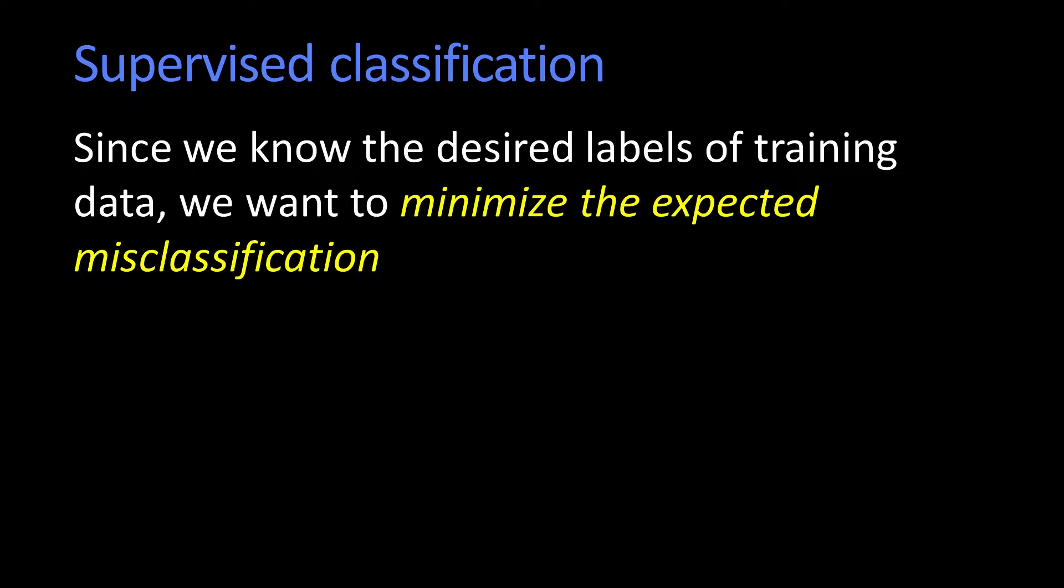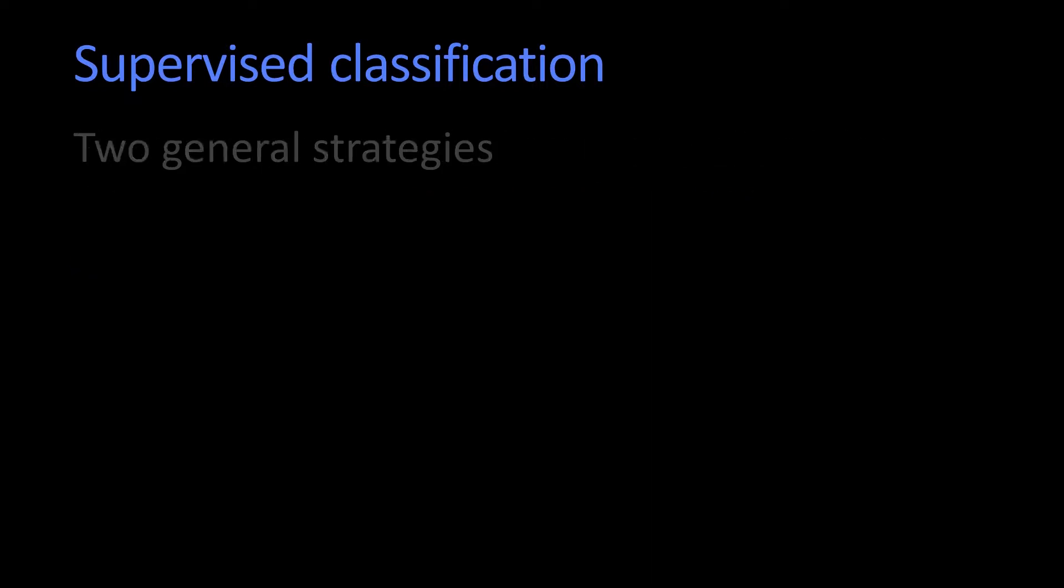We want to make mistakes as infrequently as possible. And the more expensive a mistake is, the less often we want to make that particular mistake. To handle classification, there are two general strategies.